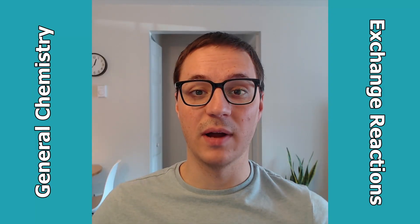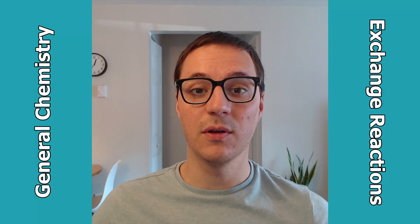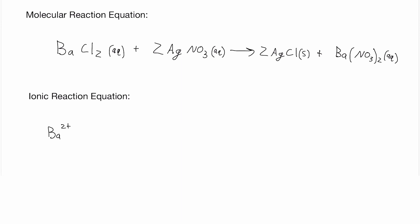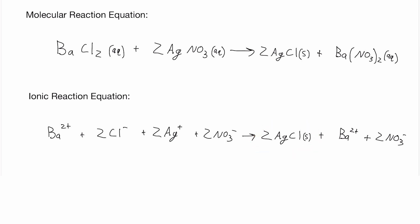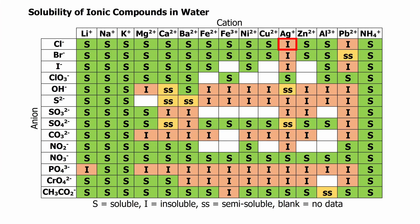I can represent the same reaction in two other ways. This is the ionic reaction equation, where each soluble compound is broken into its constituent ions. Here the aqueous labels are omitted for clarity. Notice silver and chloride remain together because silver chloride is insoluble, which I know from checking my solubility table.